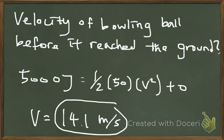Now let's say I want to find the velocity of the bowling ball before it reaches the ground. I know the height will be zero, and the whole potential energy portion of the equation will be zero.